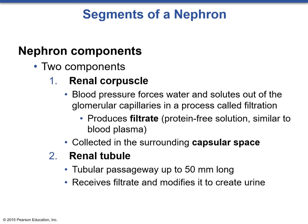The nephron consists of two primary structural components: the renal corpuscle and the renal tubule. The corpuscle is where filtration occurs; it consists of the afferent and efferent arterioles, the glomerulus — which is a capillary network — and the Bowman's capsule, an expanded region of the tubule made of simple squamous epithelium. In the renal corpuscle, blood pressure forces water and solutes out of the glomerular capillaries in a process called filtration. Filtrate is a protein-free solution similar to blood plasma, and it is collected in the surrounding capsular space.